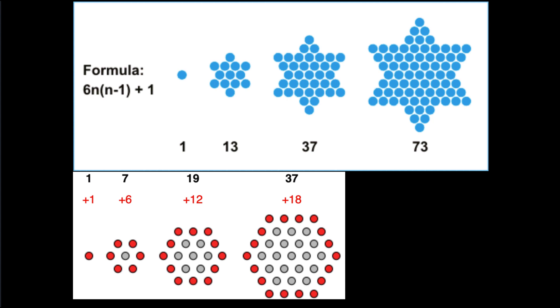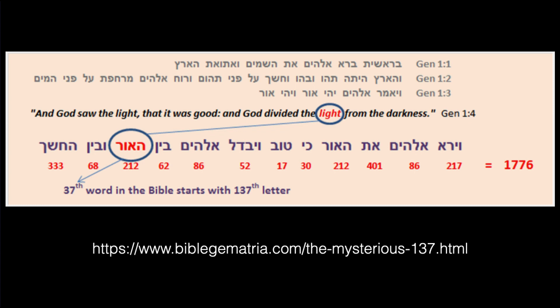An interesting property of the number 37 is that it is a figurate number, known since ancient times. The number 37 is both a star number and a centered hexagonal number. If you reverse 37 you get 73, which is also a star number. Here is Genesis 1:4 in the original Hebrew — using standard Hebrew gematria, it adds up to 1,776, which is 888 plus 888, or 74 times 24. The word 'light' is the 37th word in the Hebrew text, and the first letter of 'light' is the 137th letter. This 37 Bible code exists in the Hebrew text, the Greek text, and the English King James Bible.